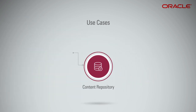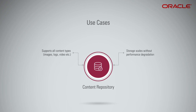For a content repository, object storage supports any content type — images, logs, and video. You can reliably store this data for a long time and the storage scales seamlessly without performance degradation. You can also access this content directly from object storage.